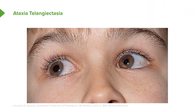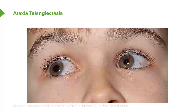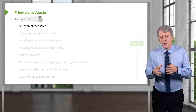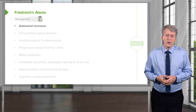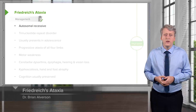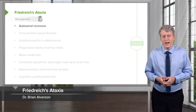Here are some telangiectasias in a child. You can see them right in the eye — these squiggly red lines where the capillary beds have developed.